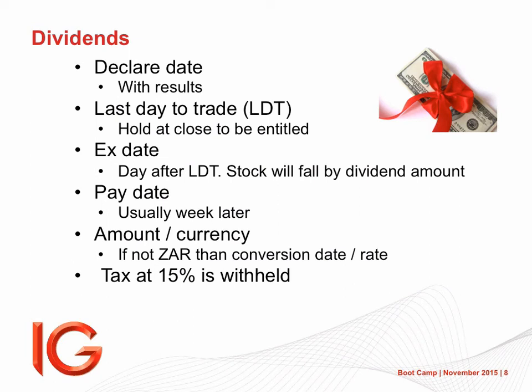Pay date: you're entitled to the dividend on LDT, but you usually only get the money a week later — the company only pays it a week later. Sometimes they might pay it a lot later. Old Mutual once had a pay date about four months later — and they're perfectly entitled to do that. The stock is no longer cum div, so it doesn't matter. Watch out for dividends declared in foreign currencies. BHP Billiton declares a dividend in US dollars. They publish a conversion rate just before they pay, say we're paying you 50 US cents, the exchange rate was 14.20, so you get around 7.10 rand.